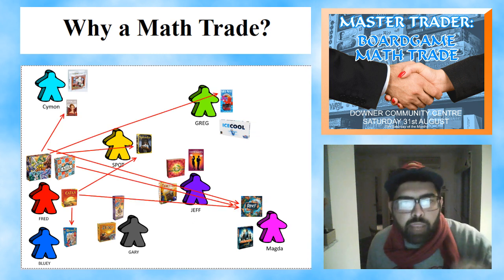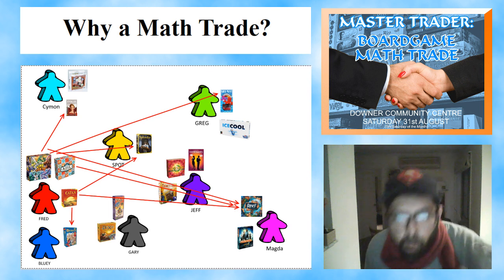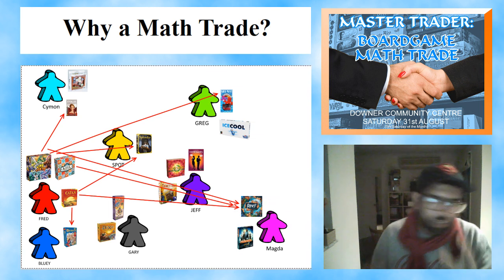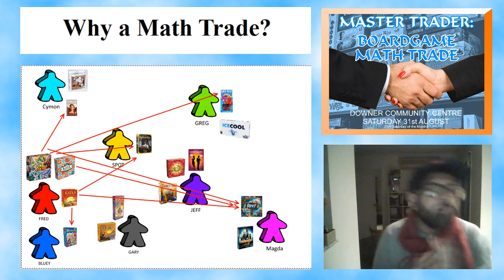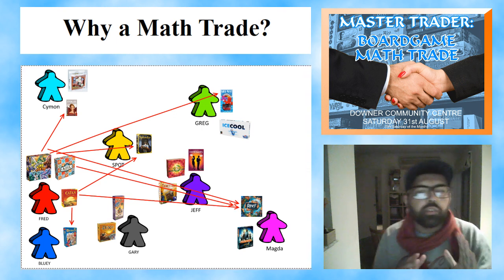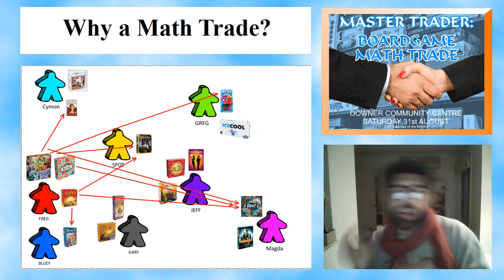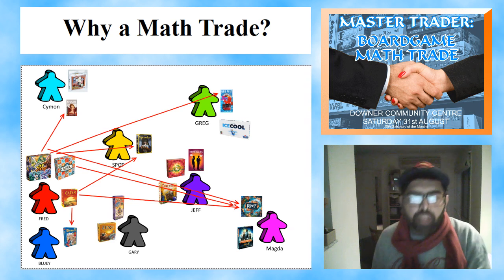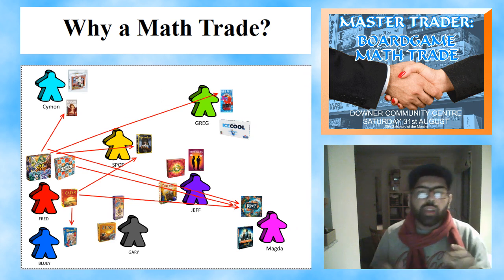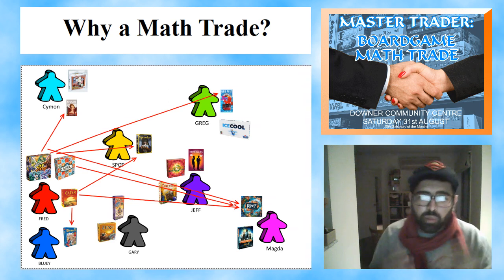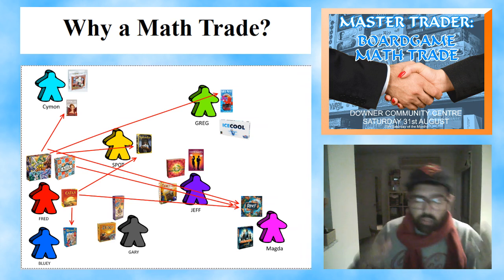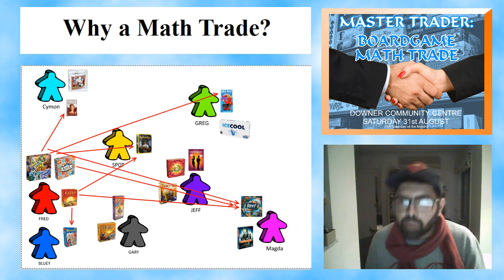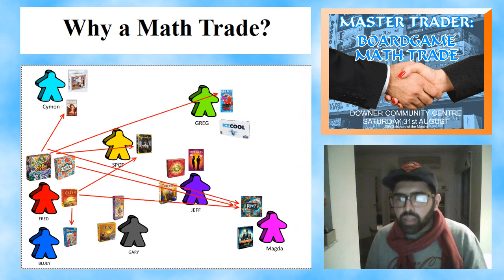Fred's got three games now. You can see King of Tokyo — he's happy to trade that for Coup, Forbidden Desert, or Reef. Azul is a brand new game he really likes, but he's happy to trade it for another brand new game like Reef. So there's one preference going that way. Whenever you come into a trade with multiple games, you probably have preferences for what you're happy to trade each game for.